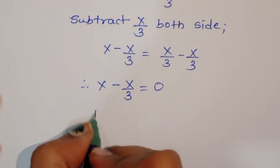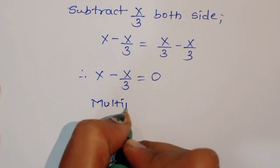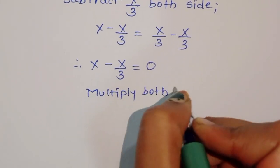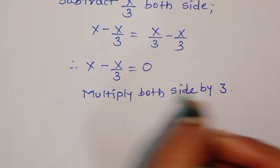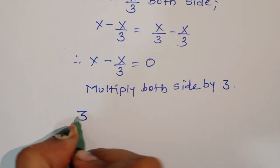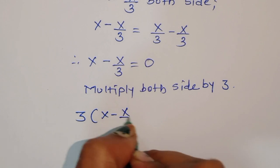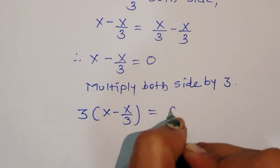Now multiply both sides by 3. We will get 3 times (x minus x/3) is equal to 0 times 3.